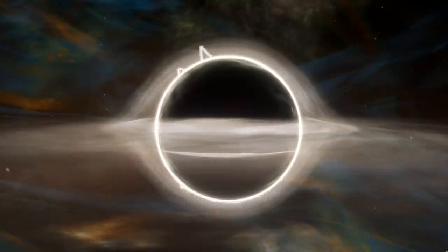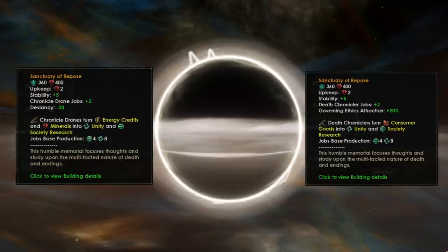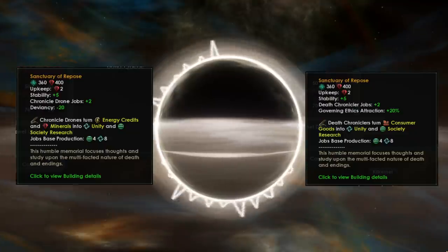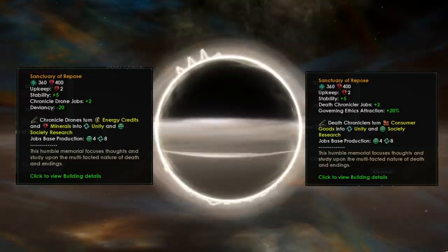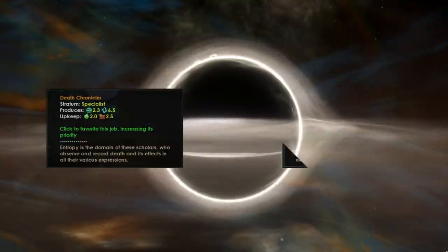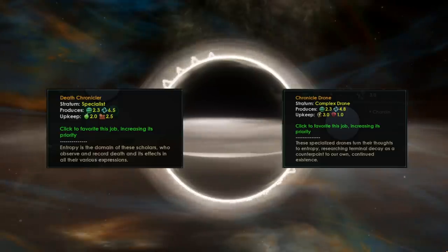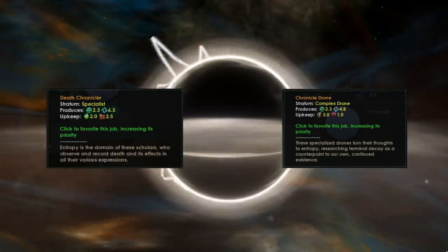Alright, so Sanctuary of Repose. It replaces the Okhatan Memorial. You get two jobs, the Death Chroniclers, and if you are machine empire or a hive mind those two kind of go together, a Chronicle Droid fair enough. What does it do? Well it generates Society Research 2.3 which is okay, it's not amazing. It's kind of similar to say the monument.